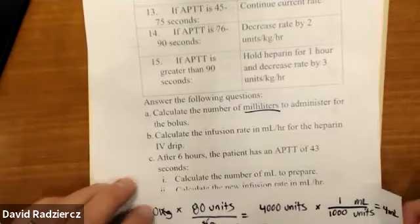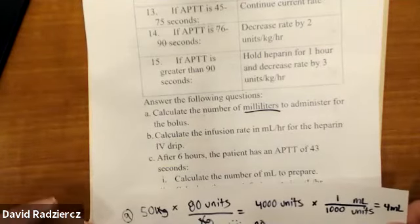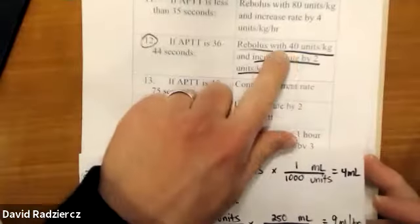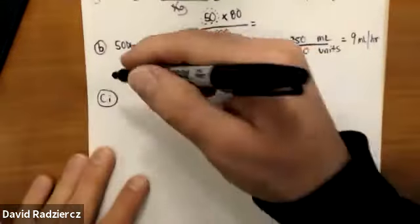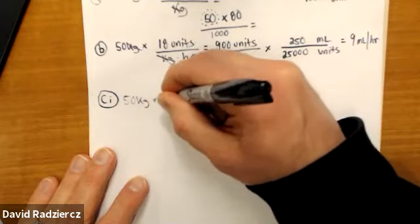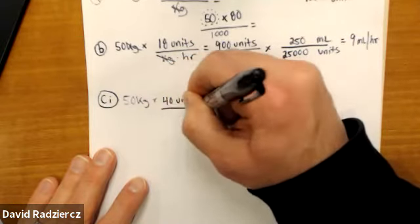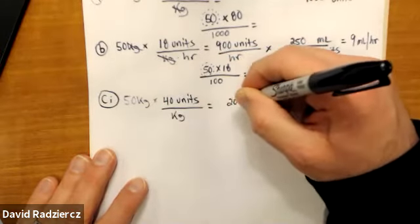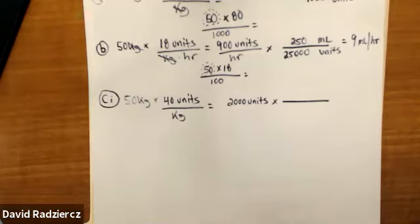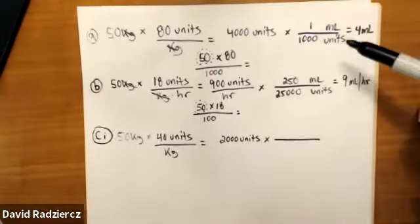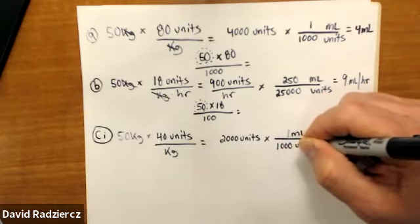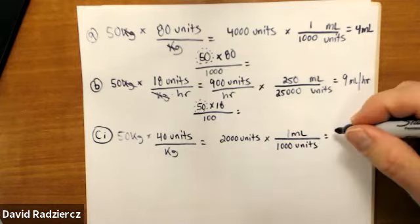C1: calculate the number of milliliters for the new bolus. The updated protocol says 40 units per kilogram. Same 50 kg patient: 40 times 50 equals 2,000 units. Since we're talking about bolus, use the same bolus dosage strength: 1 mL per 1,000 units. That gives 2 mL. The shortcut is patient weight times 40 over 1,000 — every time you do a bolus dosage strength, you're dividing by 1,000.